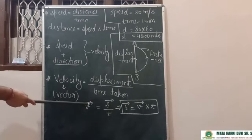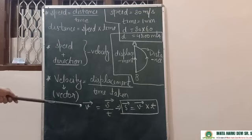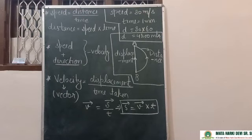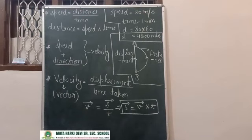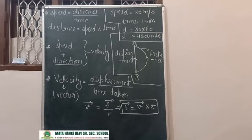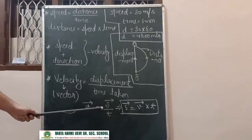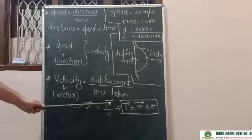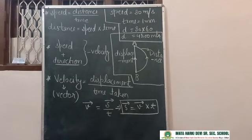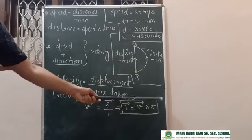Velocity is denoted by small v with an arrow on top. The arrow shows the direction of that physical quantity — if a quantity has an arrow over its symbol, it is a vector quantity. So, v with an arrow equals displacement divided by time. From this formula, displacement equals velocity multiplied by time.